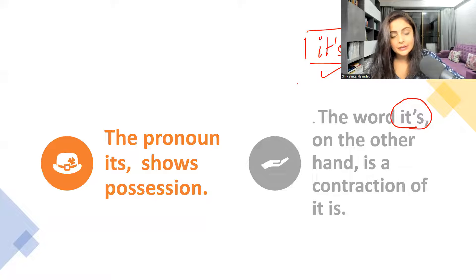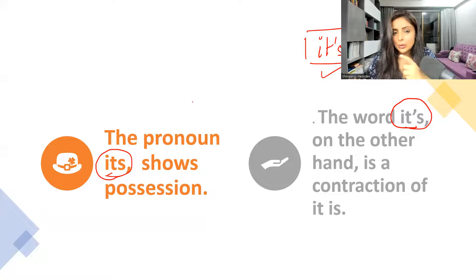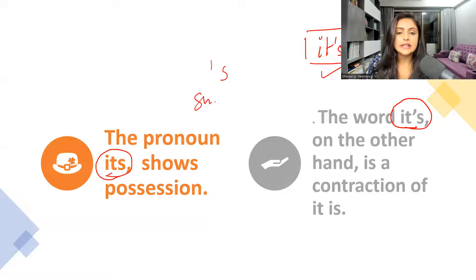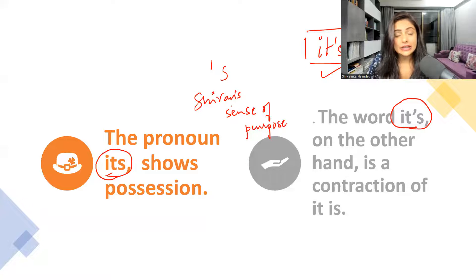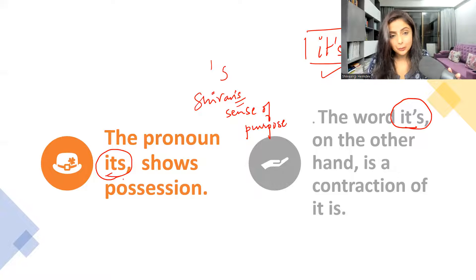Now, 'its' without an apostrophe indicates possession — belongingness. Nouns generally indicate possession with an apostrophe s; for example, 'Shivani's sense of purpose.' However, when we talk about pronouns, they indicate possession without an apostrophe s. 'It' is a pronoun, so 'its' — without an apostrophe — is used to show possession or belongingness.